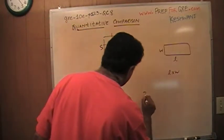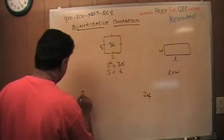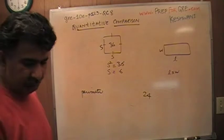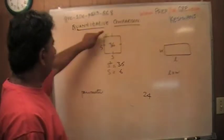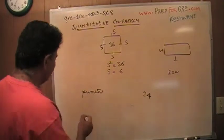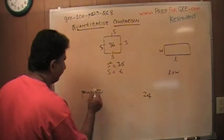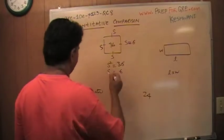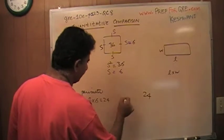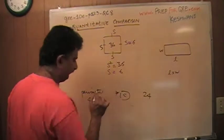And the perimeter—what does perimeter mean? Perimeter means sum of all the sides: 1, 2, 3, 4. Obviously, so it's 4 times 6 because each side equals 6, and therefore these two quantities are equal to each other. The answer is C. That's all.